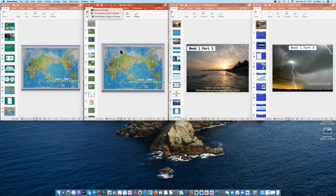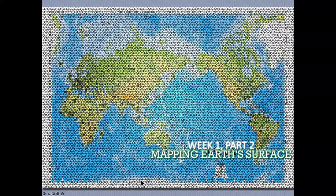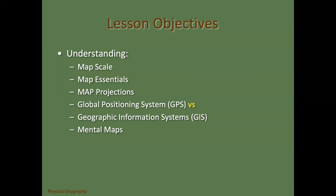Looking at the Earth's surface — the objectives here include understanding map scale, projections, the difference between GPS and GIS, and remote sensing. The Earth is a sphere, a globe — not flat. I can't believe that's still something people argue about. Because it's a globe, we use a system of latitude and longitude lines.